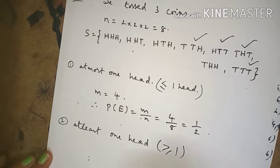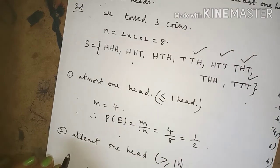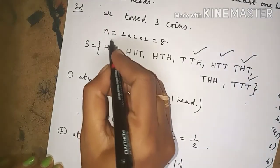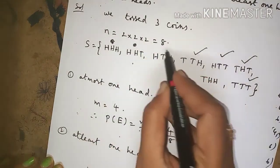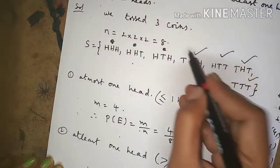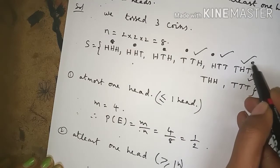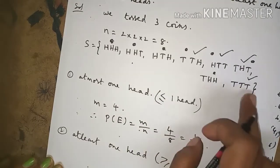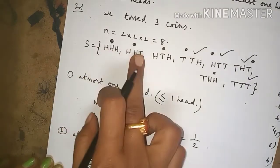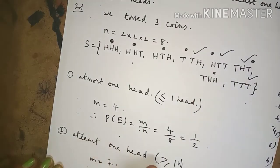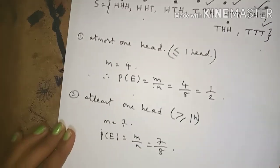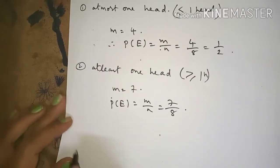The second part: at least 1 head means greater than or equal to 1 head — either 1 head, 2 heads, or 3 heads. Counting from the sample space: HHH (3 heads), HHT and HTH and THH (2 heads each), HTT and THT and TTH (1 head each) — that gives m equals 7. Therefore P(E) equals m by n, which is 7 by 8.